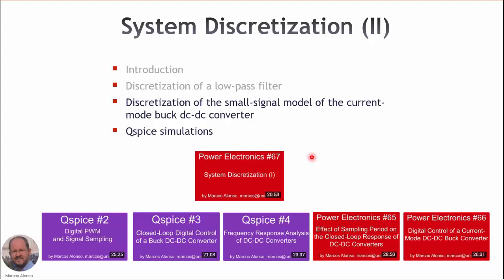Welcome to this video entitled 'System Discretization Part 2,' which is Power Electronics number 67. In the first part, we saw an introduction and explained how to discretize a low pass filter. Today we will see how to do the same process to discretize the small signal model of the current mode buck DC-DC converter.